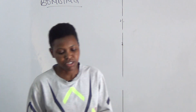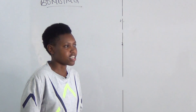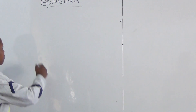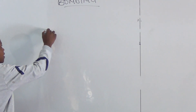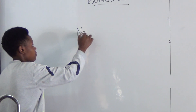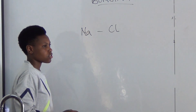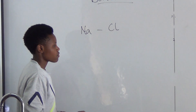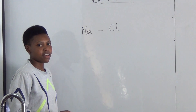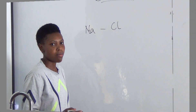So what is chemical bonding? We can say that chemical bonding is a mutual force of attraction that holds the particles together during a chemical reaction. The force of attraction — for instance, between sodium and chlorine — is what we call a chemical bond.